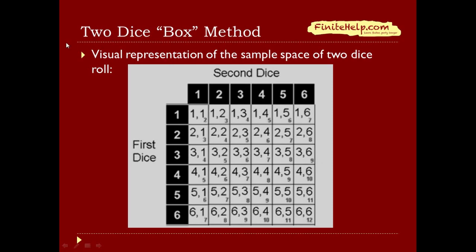Here's what's called a two-dice box method. This is for working out a problem that involves rolling two dice and their outcomes. Here's a visual representation of the sample space, which consists of the 36 outcomes.